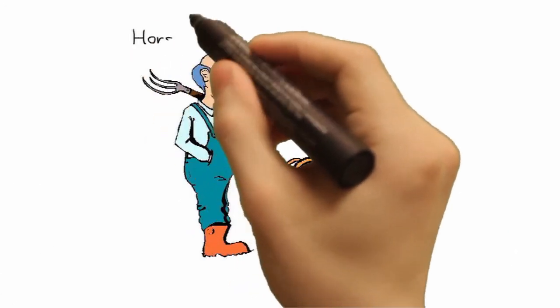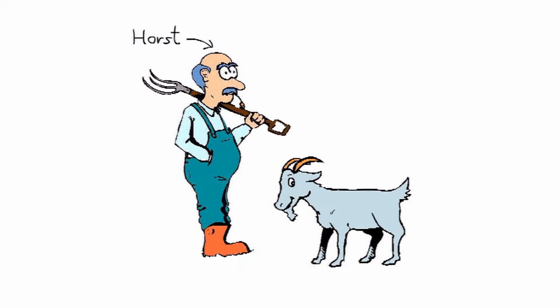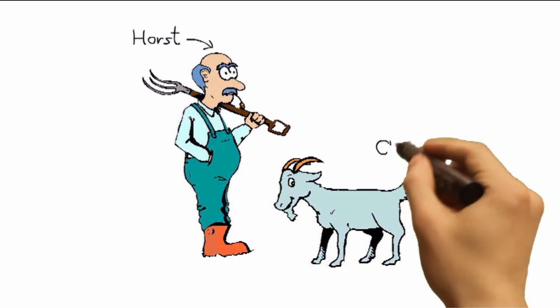Das ist der Bauer Horst und daneben, da seht ihr seine äußerst gefräßige Ziege, das ist der Charlie.